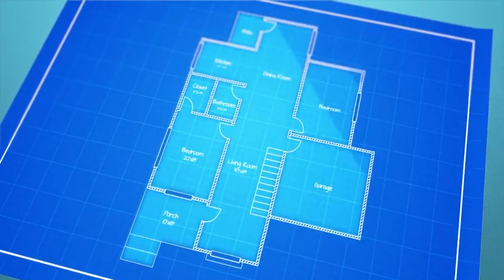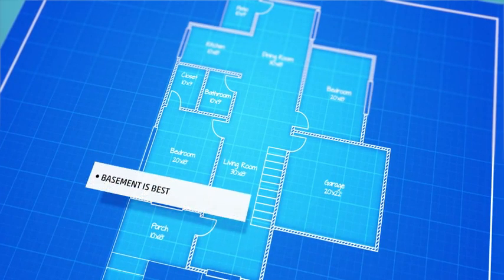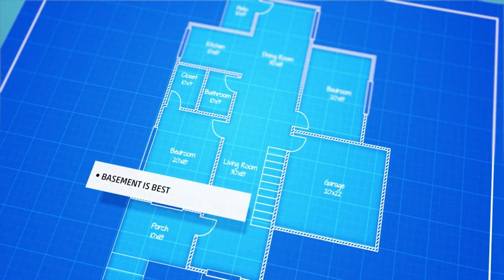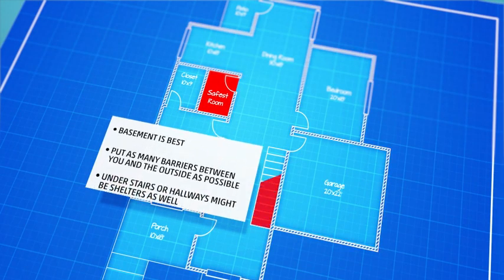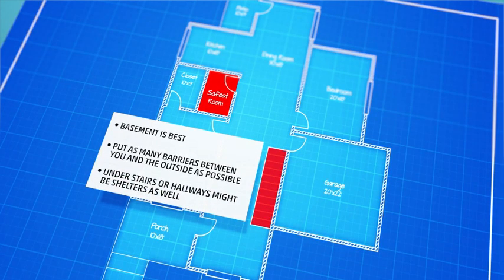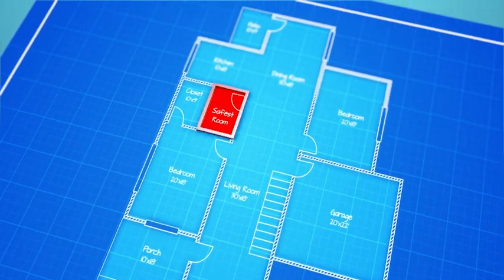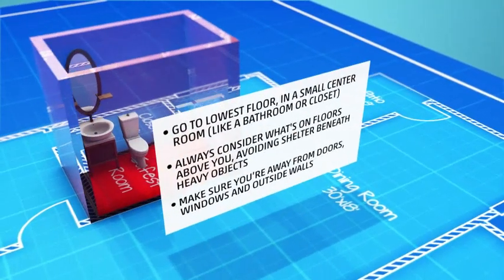Single-story and two-story homes are quite similar. You'll want to stay as close to the ground as possible. Basements are ideal, but if that isn't an option, stay on the ground floor. Hallways and closets under the stairs can be good choices. Make sure you're away from doors, windows, and outside walls.